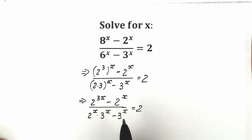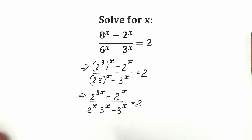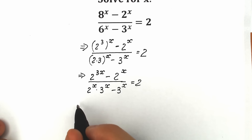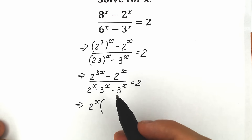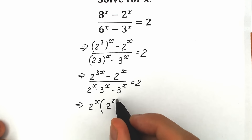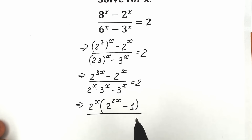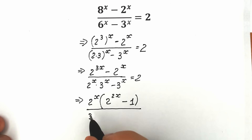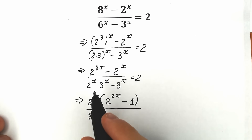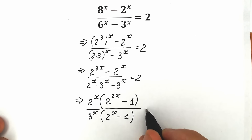Now let's factor 2^x from our numerator. We have 2^(3x) and 2^x, so we can factor out 2^x. As a result, we get 2^x times (2^(2x) minus 1) in the numerator. In our denominator, let's factor out 3^x, giving us 3^x times (2^x minus 1), all equal to 2.